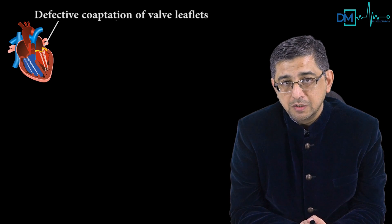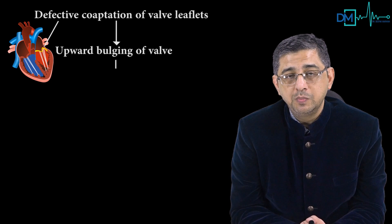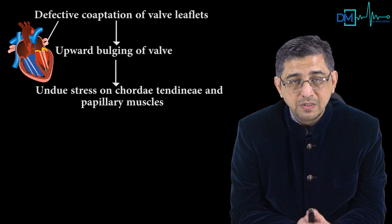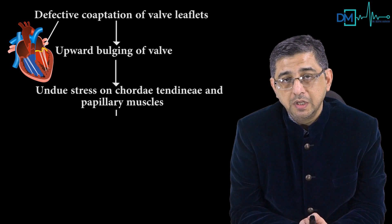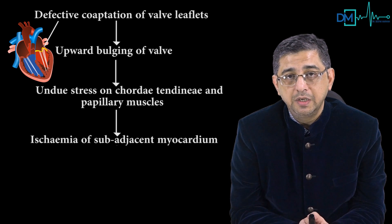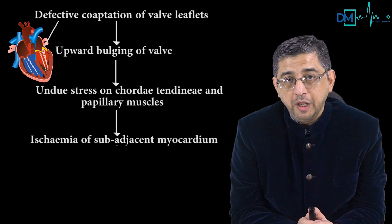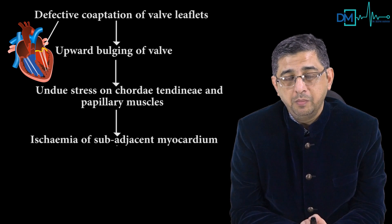Why are we worried about mitral valve prolapse? There are two basic problems. Problem number one: because of defective coaptation of the leaflets, the valve bulges upward, putting undue stress on the chordae tendineae and papillary muscles. This undue stress on the papillary muscles can result in ischemia of the sub-adjacent myocardium, explaining why chest pain and arrhythmias develop in MVP patients.